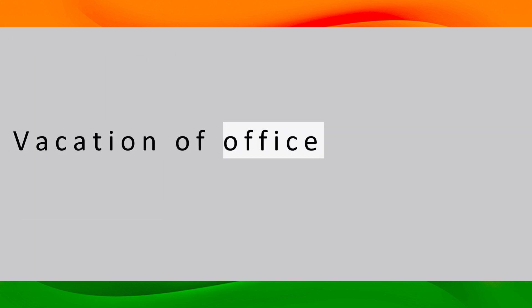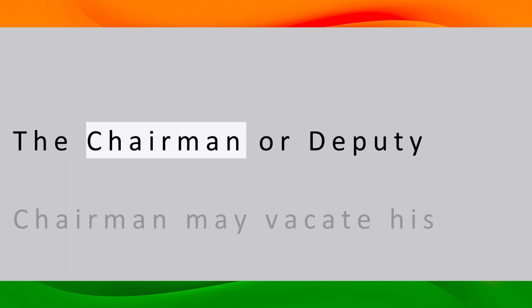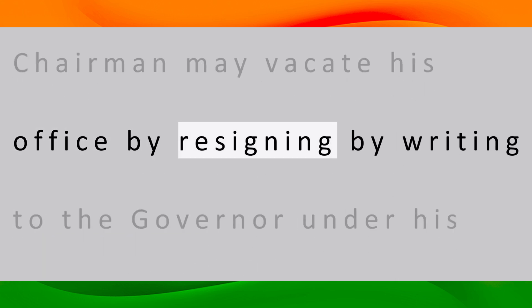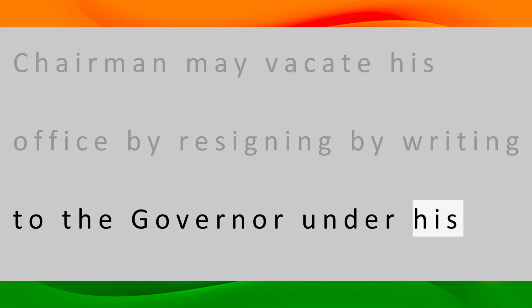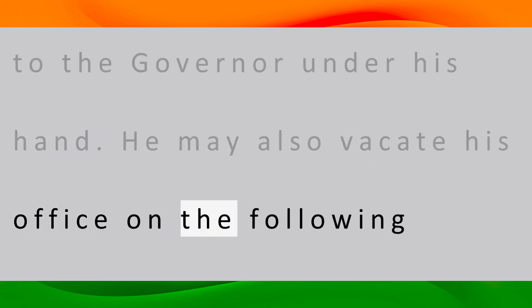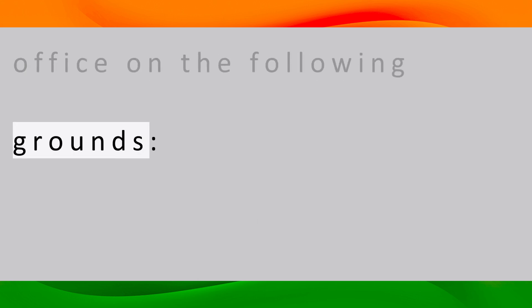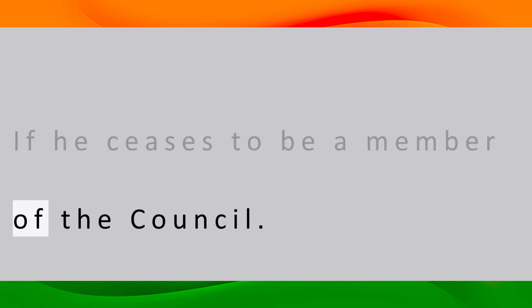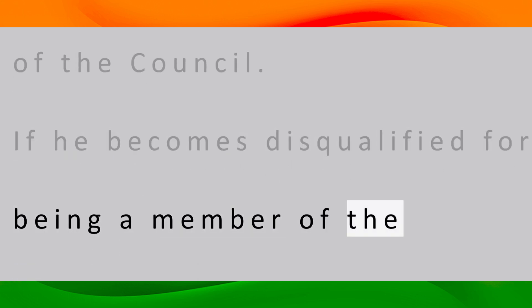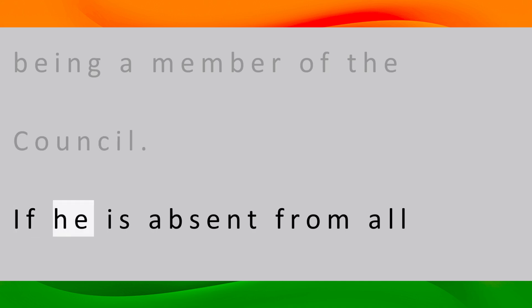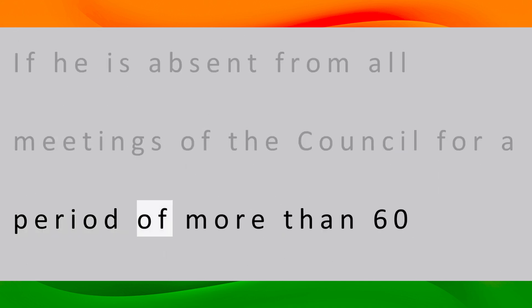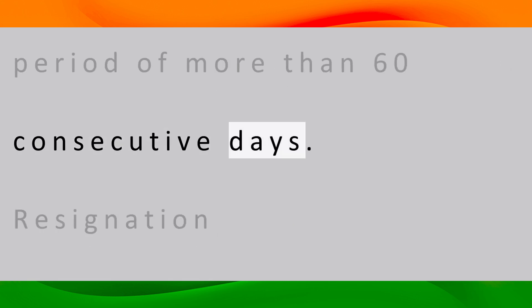Vacation of Office: The Chairman or Deputy Chairman may vacate his office by resigning by writing to the Governor under his hand. He may also vacate his office if he ceases to be a member of the Council, if he becomes disqualified for being a member, or if he is absent from all meetings of the Council for more than 60 consecutive days.